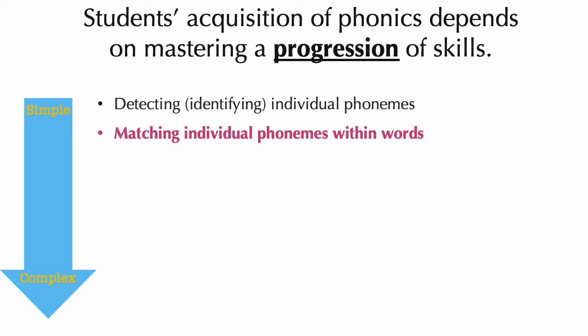Next is matching individual phonemes within words. This means whether the student can not only identify a specific phoneme in a familiar word, but whether they can generalize and also identify it in an unfamiliar word. As an example, you might say and show the student the words ball, dog, and cat, and ask the student to identify the word that has the same beginning sound as the word call.